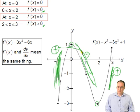In order to go from positive to negative, you have to pass through 0. And the place where you pass through 0 is this point here, your local max.